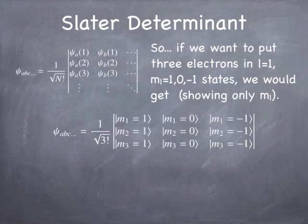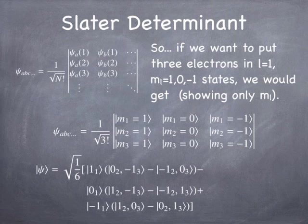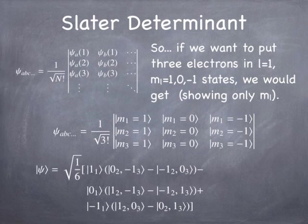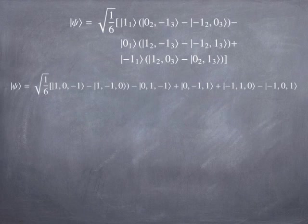That would mean electron 1 in the +1 state, electron 1 in the 0 state, and electron 1 in the −1 state as the first row. The second row is electron 2 in the +1, 0, and −1 states, and so on. Multiplying all that out using the normal rules of determinant calculation, I get: the first electron is in the +1 state times the superposition of the second electron in 0 and the third in −1, minus the second in −1 and the third in 0, and so forth — producing a hideous mess.